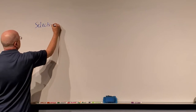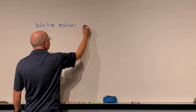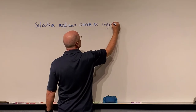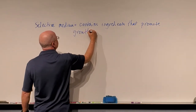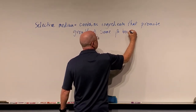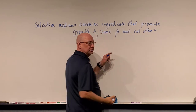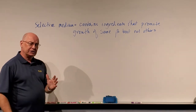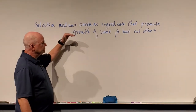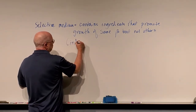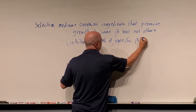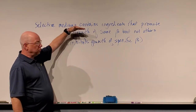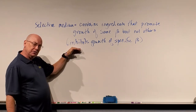A few other types to discuss. A selective medium contains ingredients that promote the growth of some bacteria but not others. A selective medium lets us select what we want to grow — it promotes the growth of some bacteria but inhibits the growth of specific others. Those chemical components would be called inhibitors.